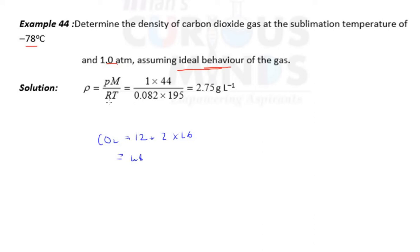So 1 into 44 upon R, 0.082, into T, 195. This is minus 78 plus 273. So this is in Celsius, converting to Kelvin, 195.